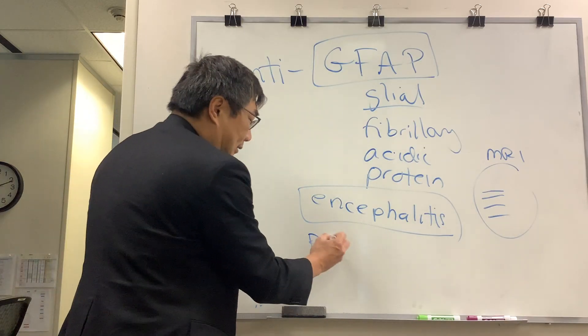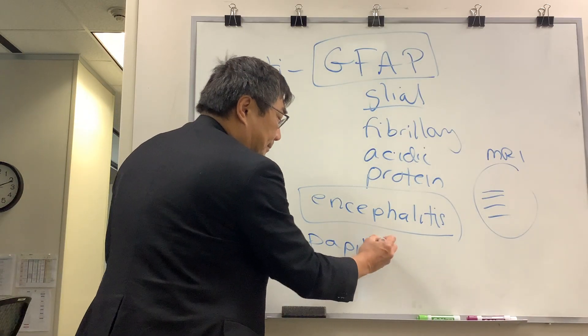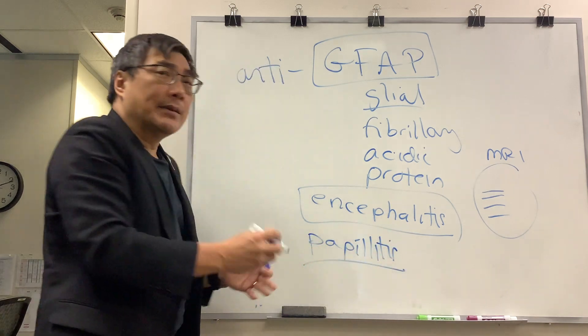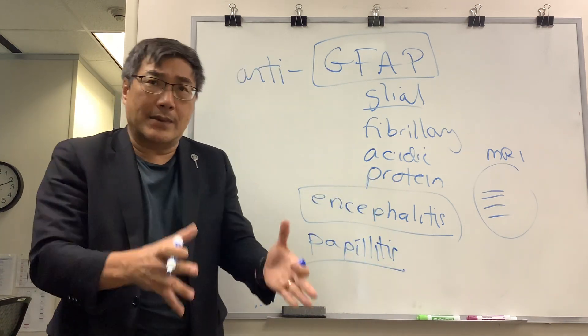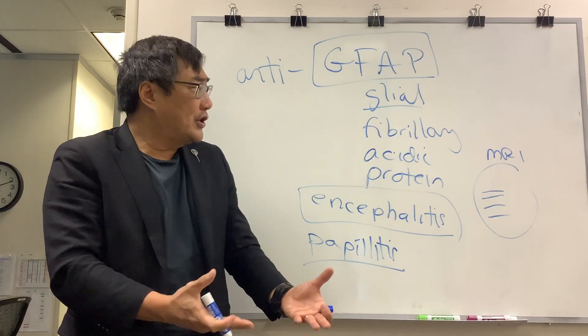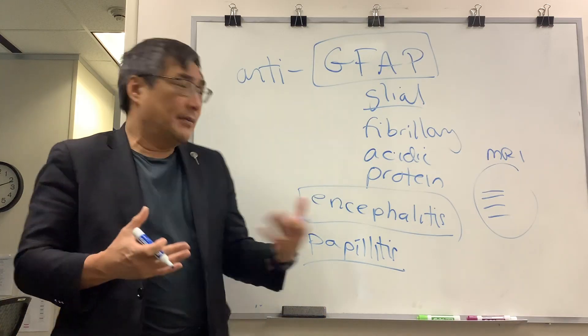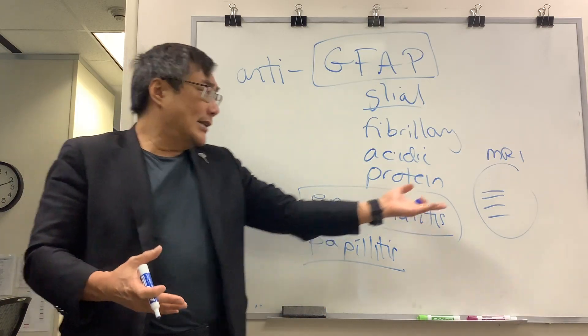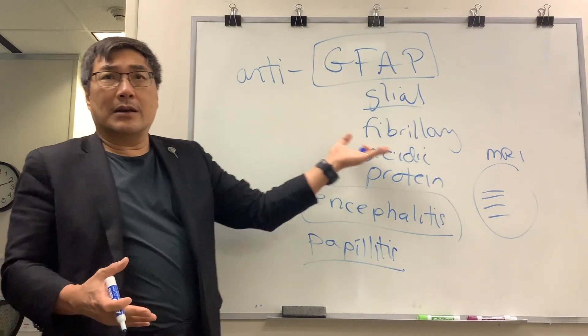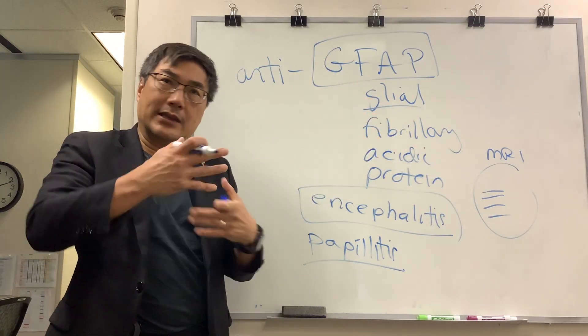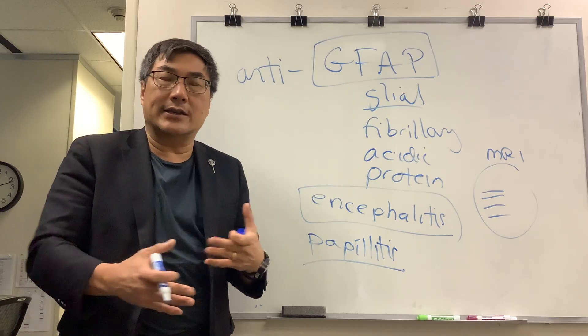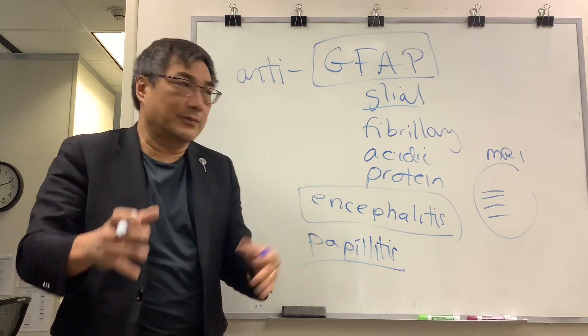The reason it comes to us is it can cause papillitis, and that papillitis means the disc is swollen and can mimic papilledema. So patients who come to us with vision loss, disc edema, encephalitis, and a typical radiographic pattern, we're going to be thinking about GFAP, just like you'd be thinking about NMO and MOG in their specific circumstances.